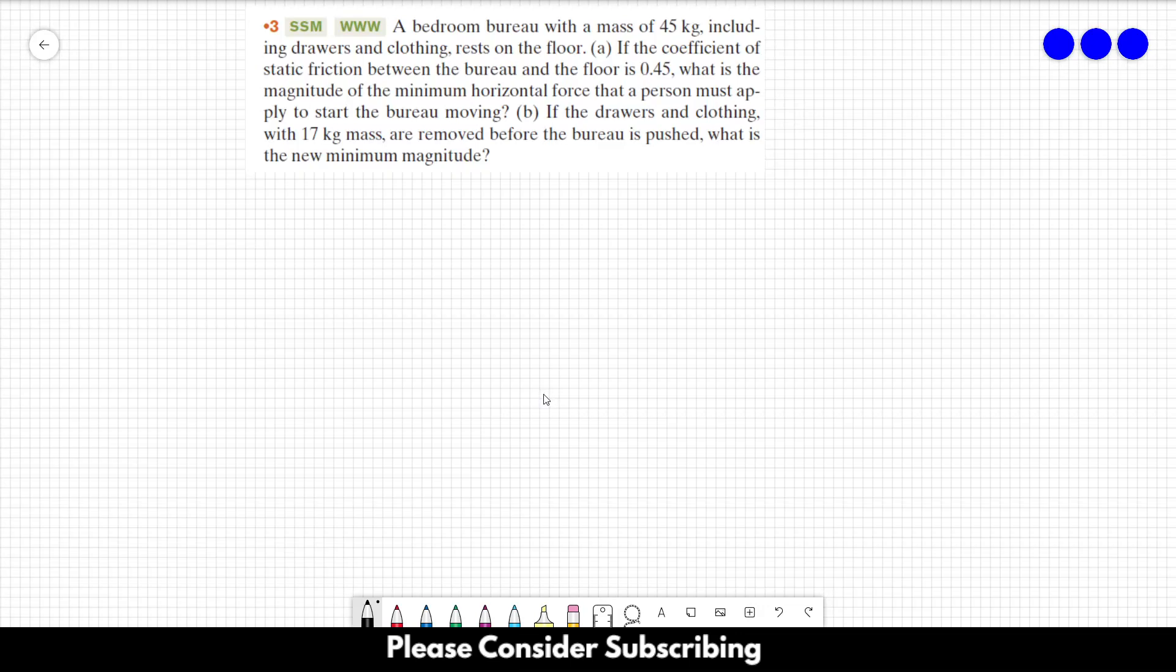Number 3. A bedroom bureau with a mass of 45 kg, including drawers and clothing, rests on the floor.